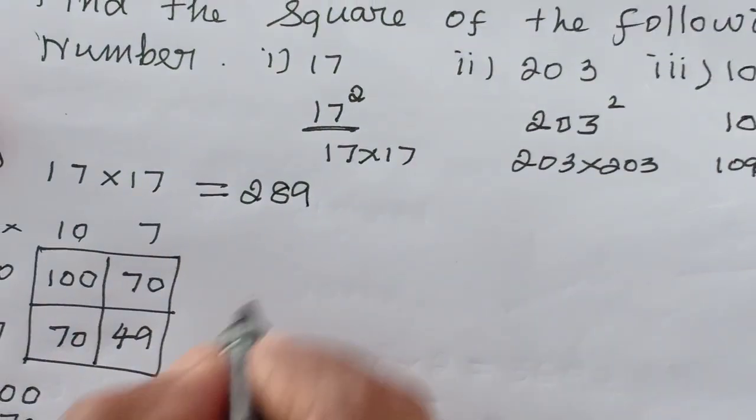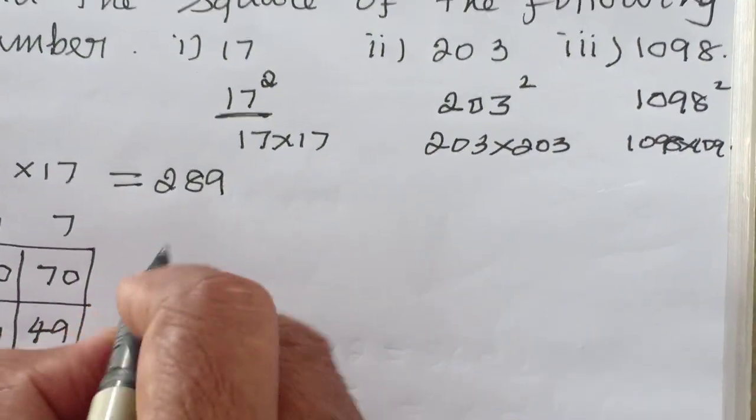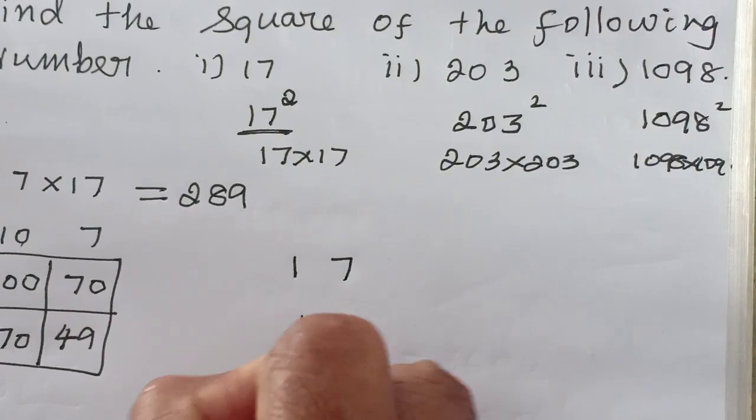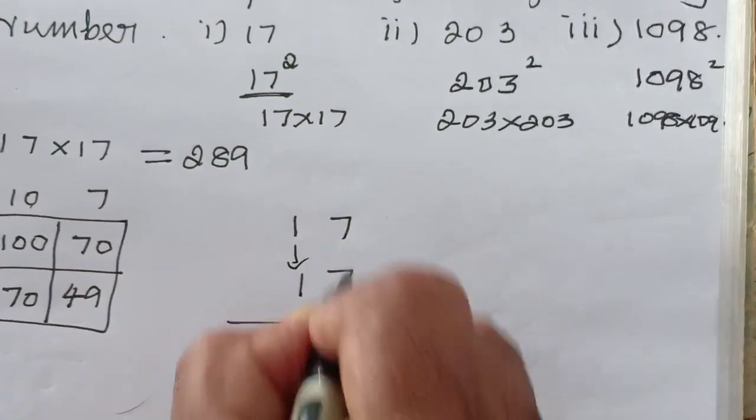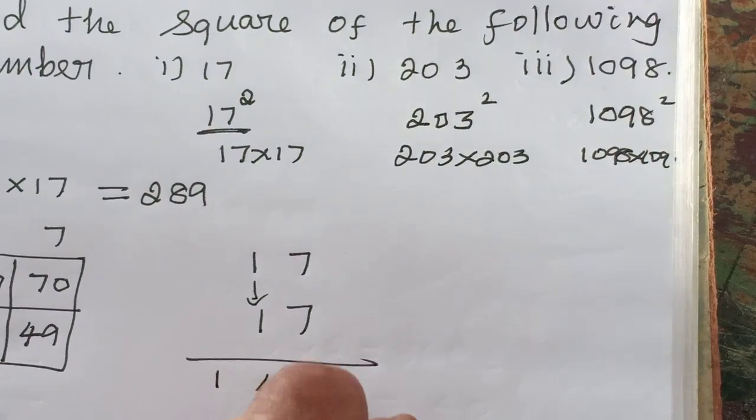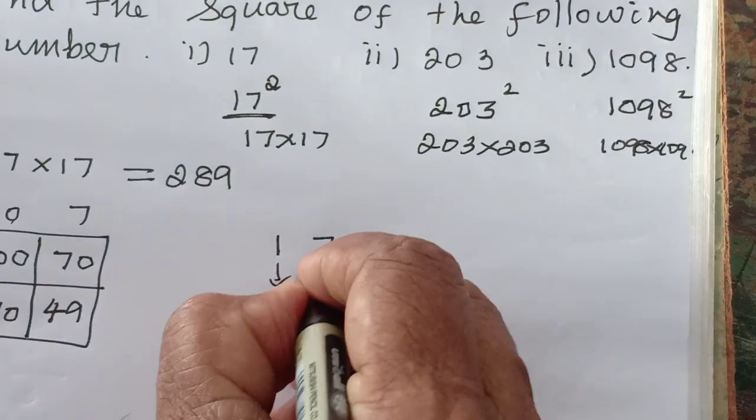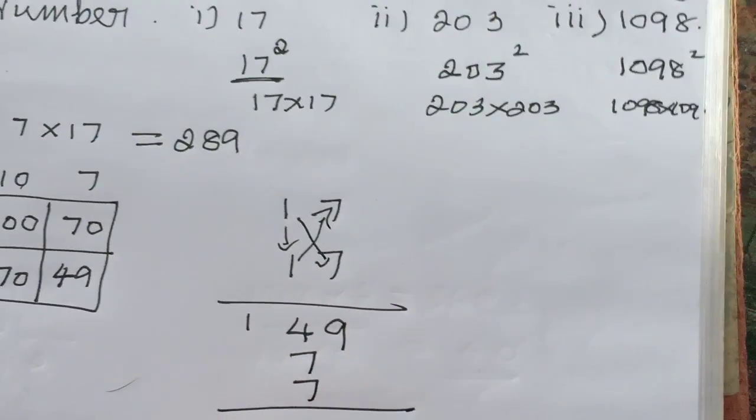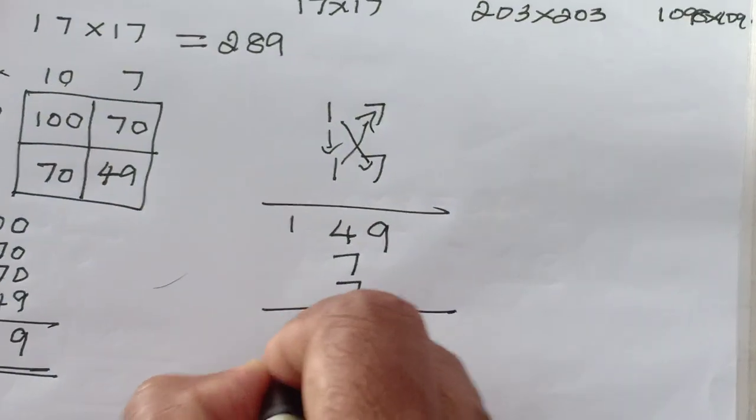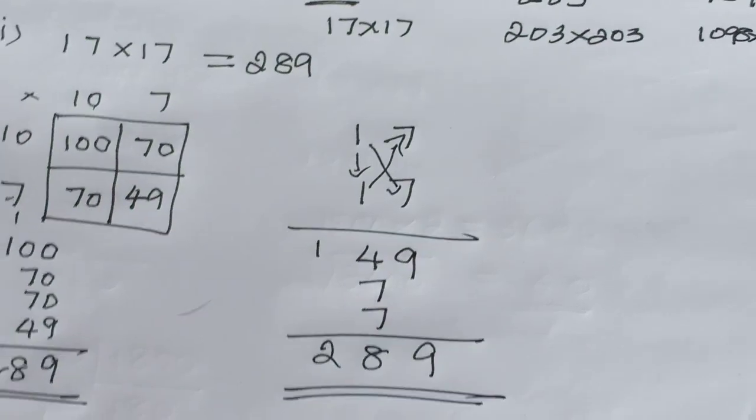This is one way of doing. Otherwise I taught you another method also. 17, 17. 1 into 1 is 1, 7 times 7 is 49. Next one is 177, 177. So 9, 8, 2. 289.